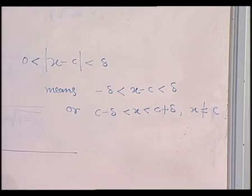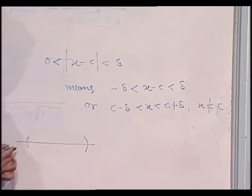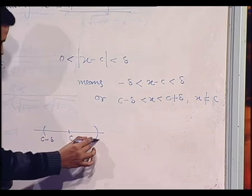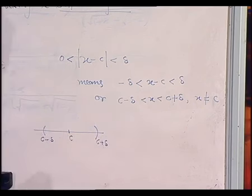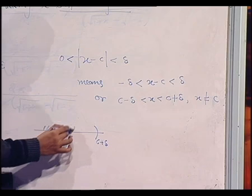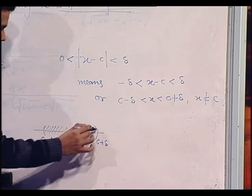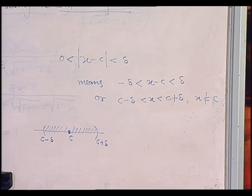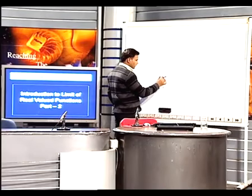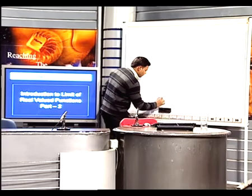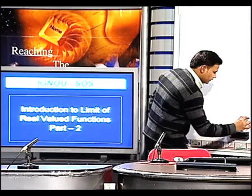If you represent this on the real line, if c is this point, then c − δ and c + δ are on either side. Excluding c, all these numbers form this interval. Similarly, |f(x) − l| < ε means f(x) lies between l − ε and l + ε.